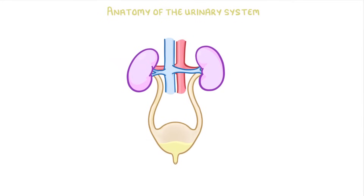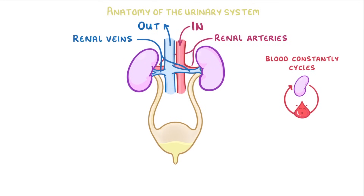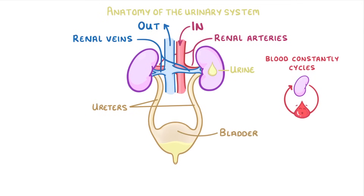To do all of this, blood constantly cycles through the kidneys, passing in through the renal arteries and out through the renal veins. From this blood, the kidneys produce urine, which passes down the ureters and is stored in the bladder until we urinate it out through the urethra.